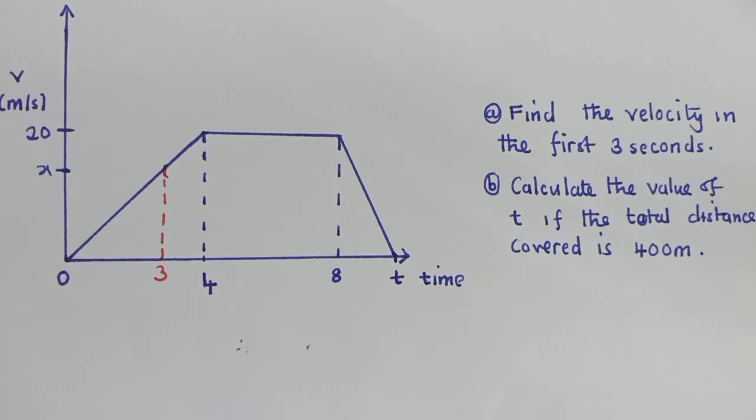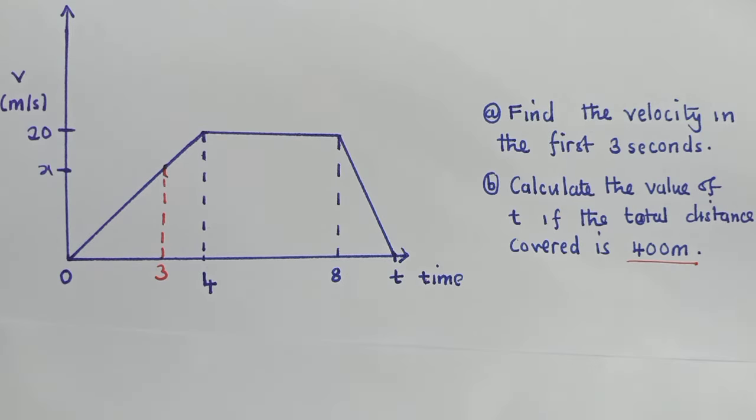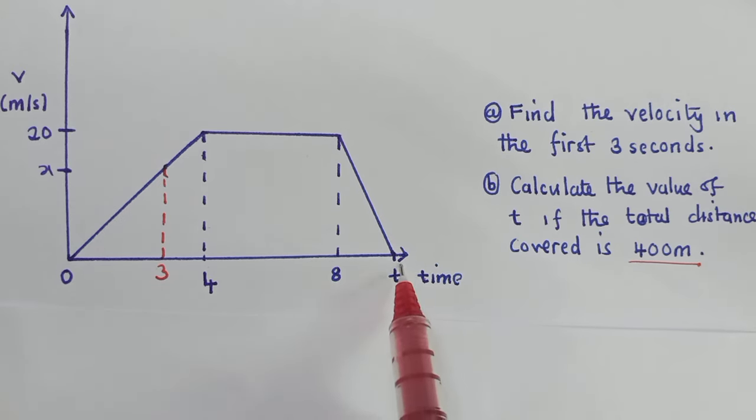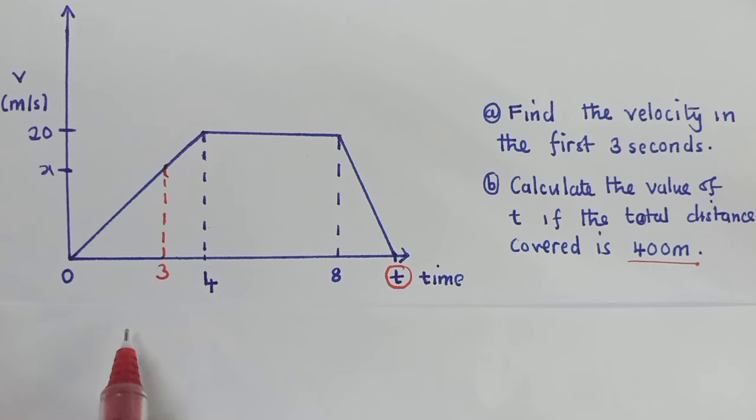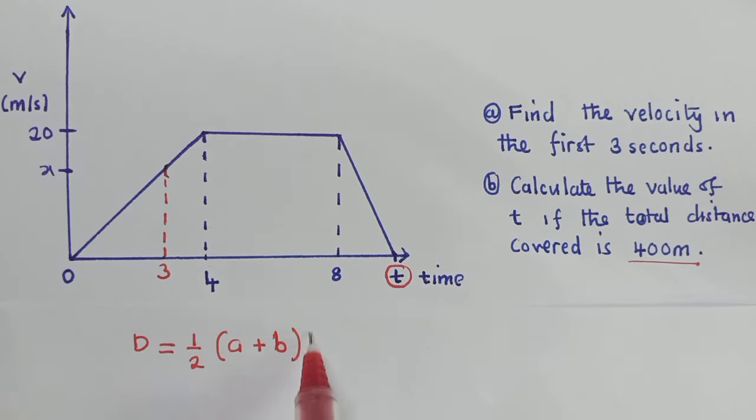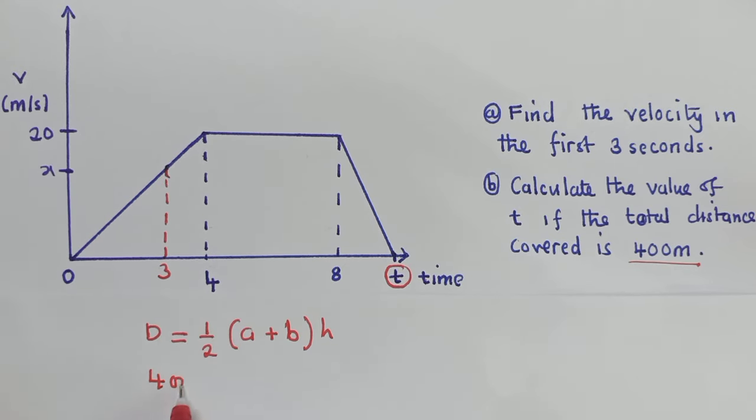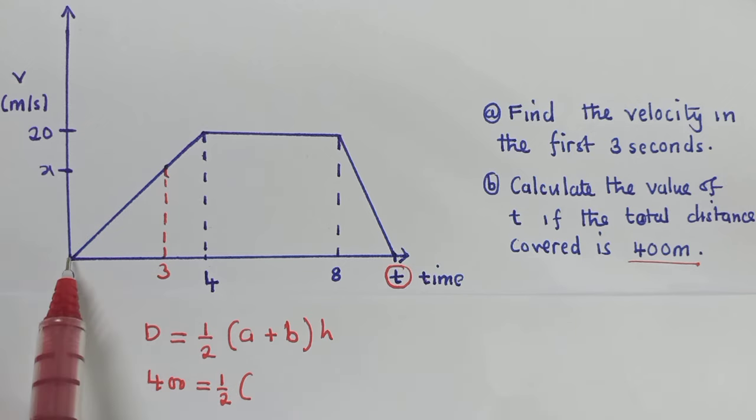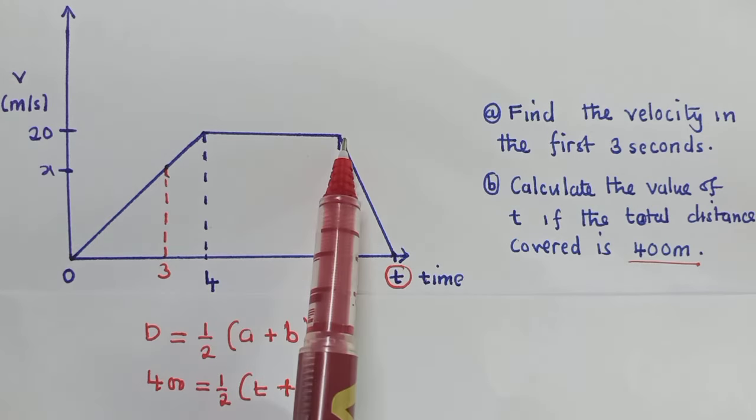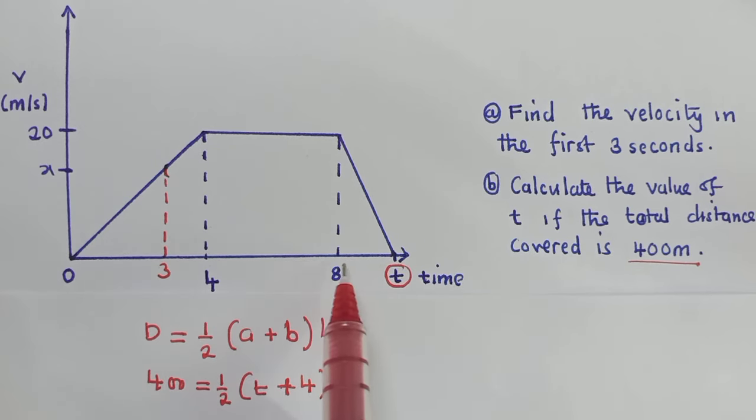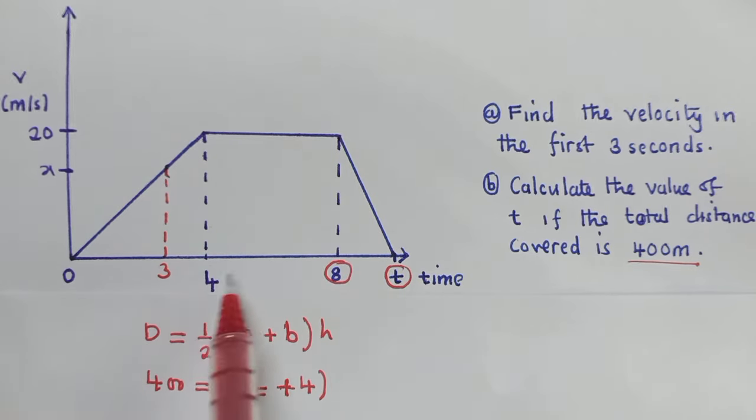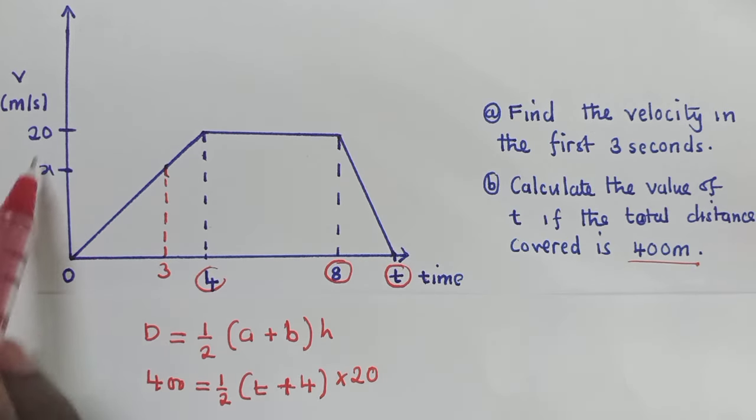Let's go to question B. For question B, we have been given the total distance, which is right here, and they want us to find the value of t. Where is our t? It's over here. So for distance, we use this formula for as long as we are working with the trapezium. We use the formula D equals one-half times (a plus b) times h. So what is the distance given? It's 400. What is the a? A will be the length or the distance from here to here, it's t. While b will be from here to here, it's 4. You just get the number which is right here minus the number which is here. It will give you a 4 times the height, which is 20.